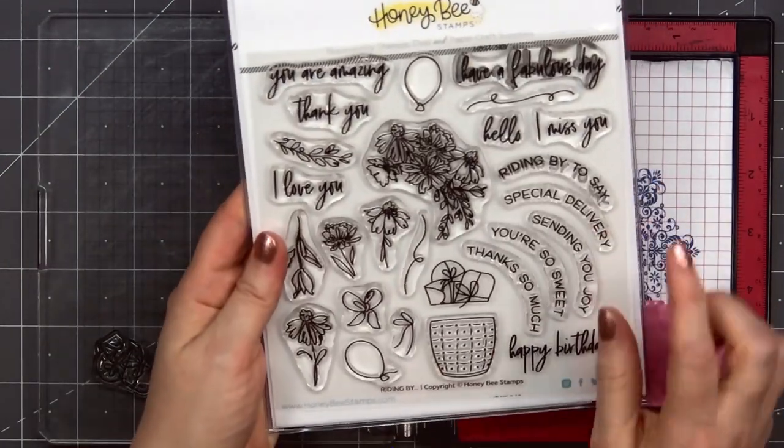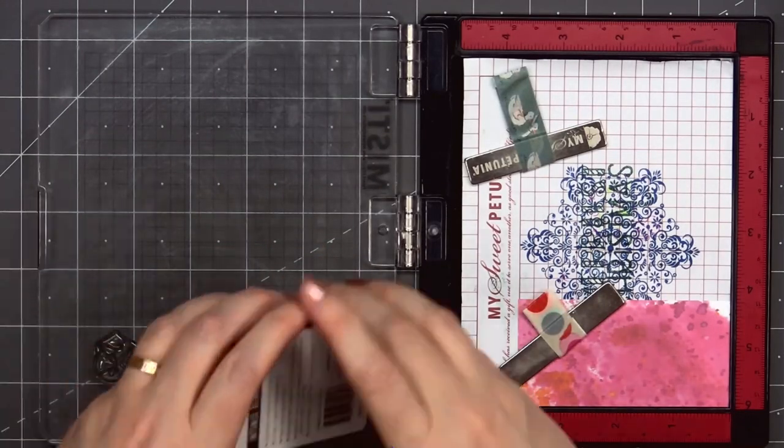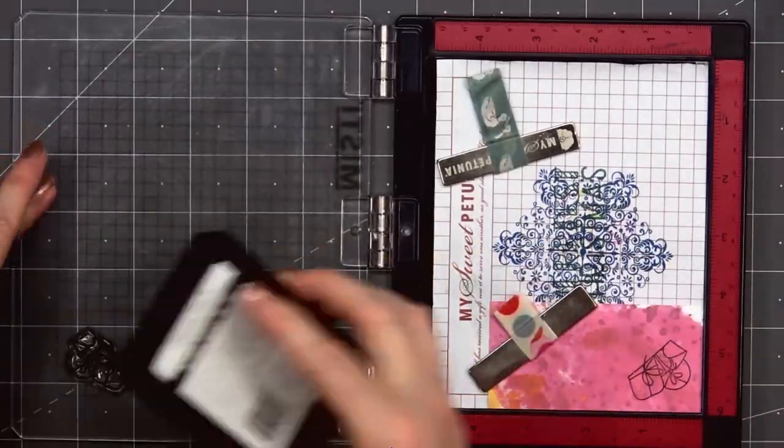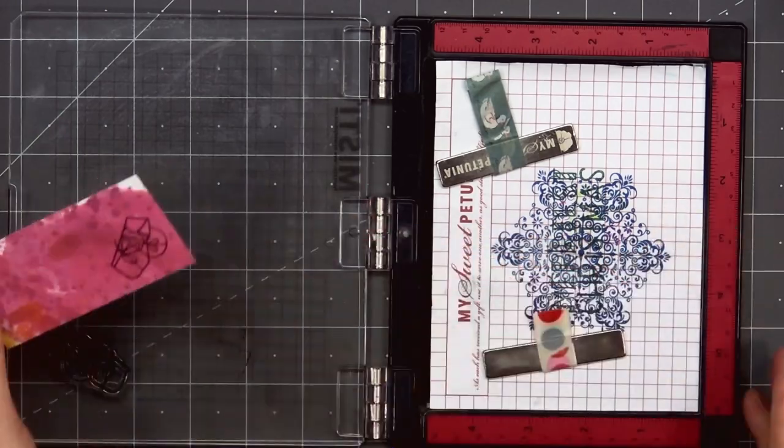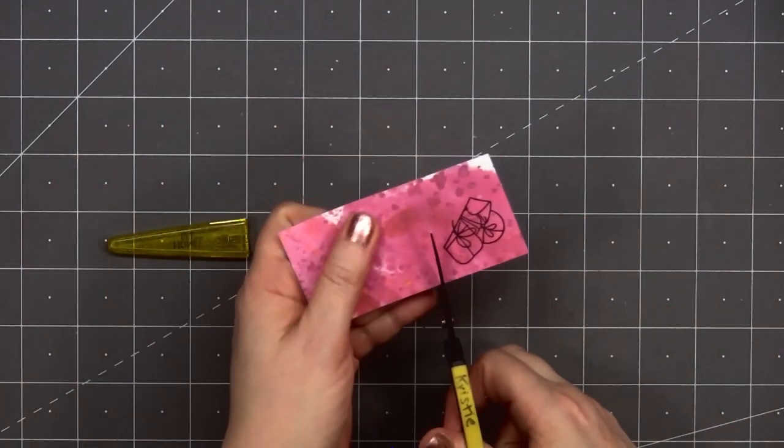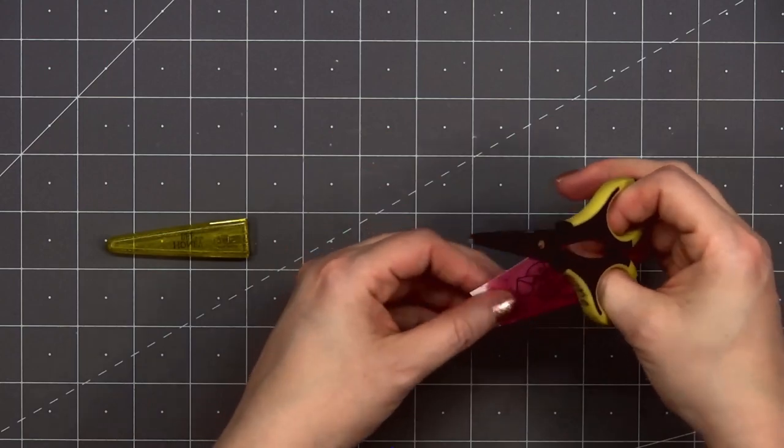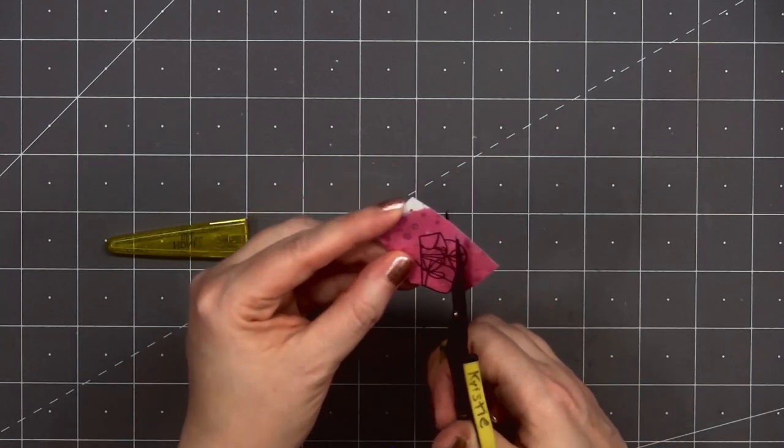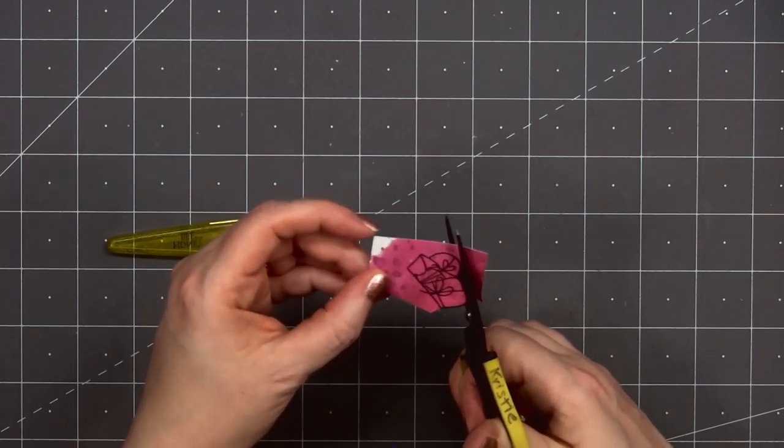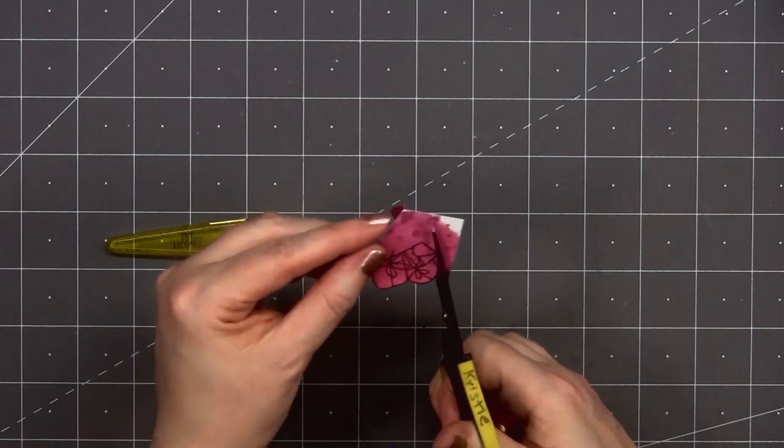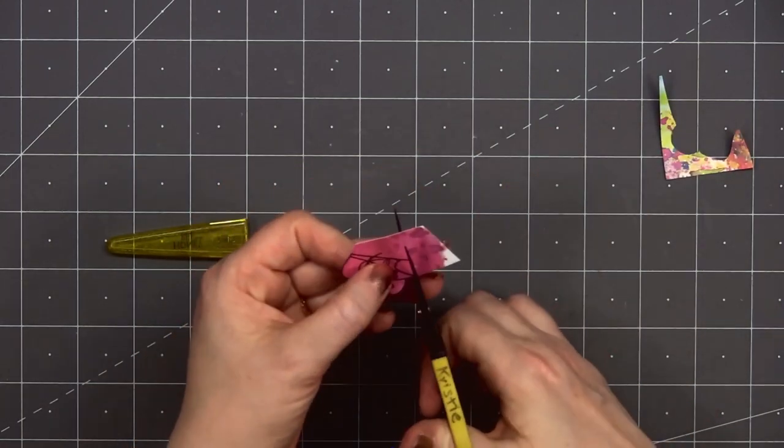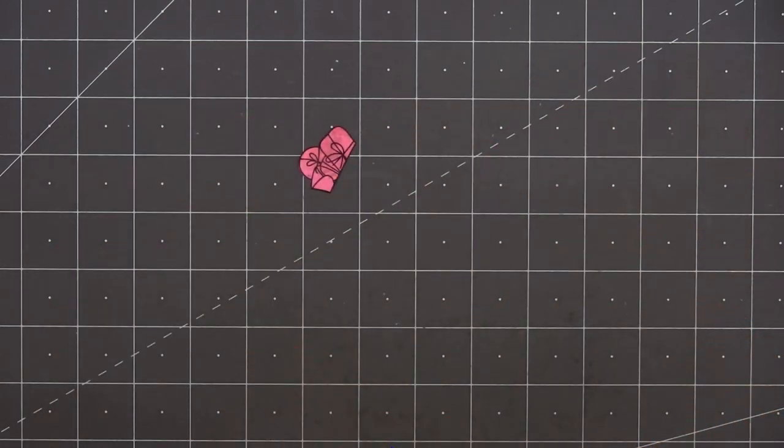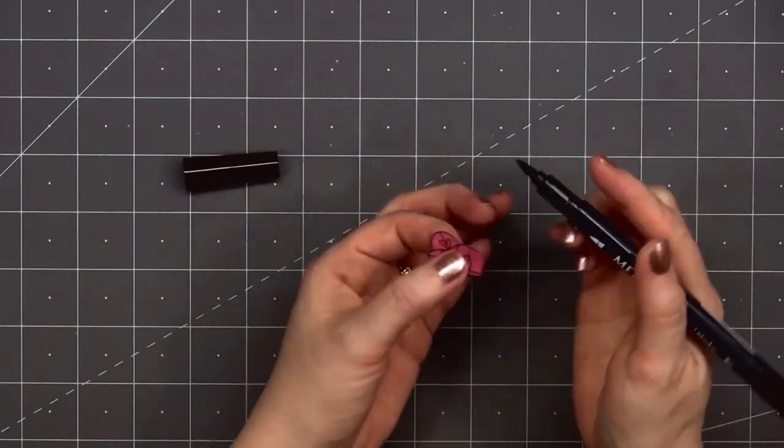Since this is a birthday card, I decided to add some presents inside the basket on the bike. I'm using the present or package image that's included on the riding by stamp set. Since I don't color images, I'm stamping it on some pattern paper and this is a small scrap piece I have left over from the team tie dye collection. I did use the mini MISTI so I could get a solid impression. Then I'll use some scissors to fussy cut out that image. And I'm cutting right along that outline stamped edge. On one of the ribbons or twine pieces I did cut it off but that's okay since it'll be tucked inside the basket.